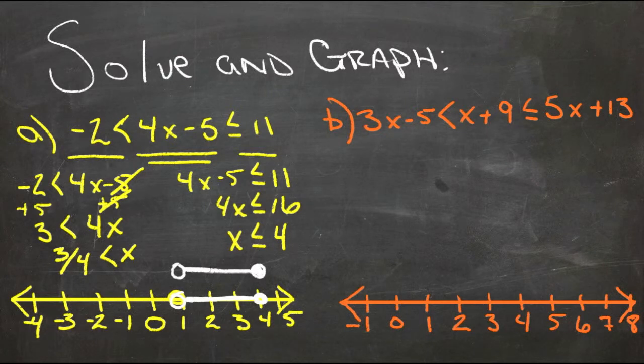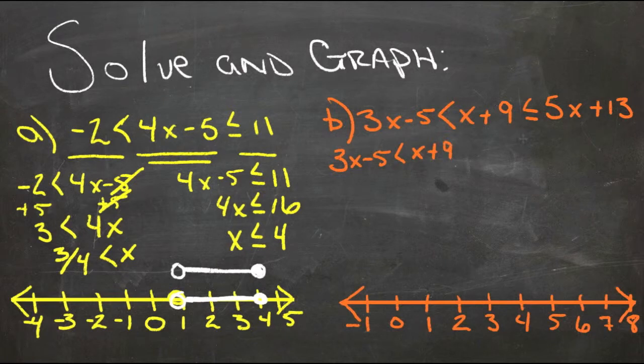And then the other example, we have 3x minus 5 is less than x plus 9, so we'll start there. 3x minus 5 is less than x plus 9, and then x plus 9 is less than or equal to 5x plus 13.